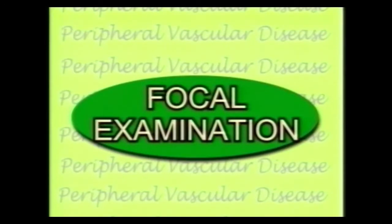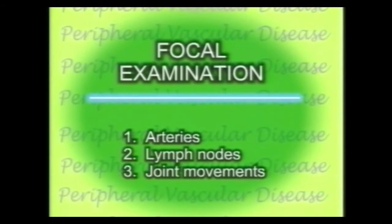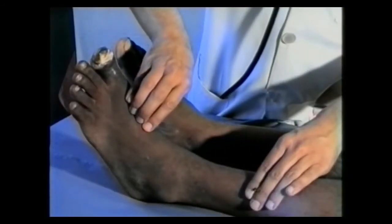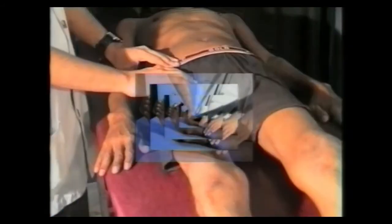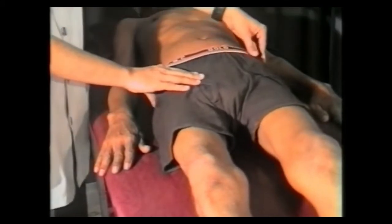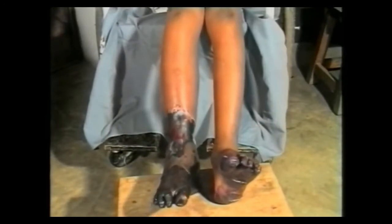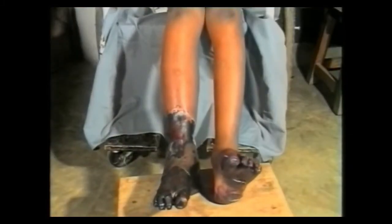Now we will proceed to focal examination — that is, examination of arteries, lymph nodes and the joints. First, palpate the arterial pulse at various levels in all the limbs. Then, palpate the inguinal region for enlargement of lymph nodes. And then, test the movements of different joints in the gangrenous area. The gangrenous portion of the limb will lose its movements, as seen in the right foot and ankle and left toes.